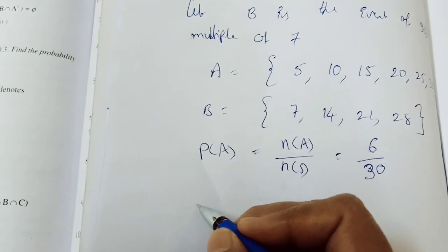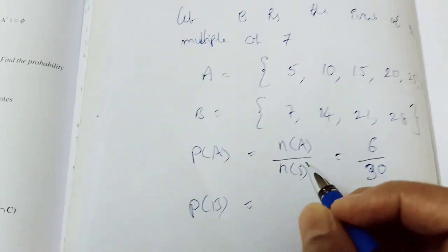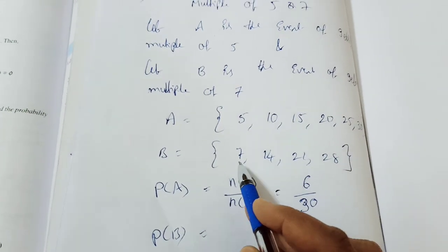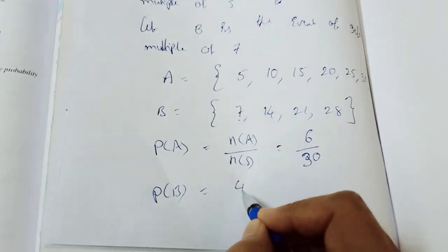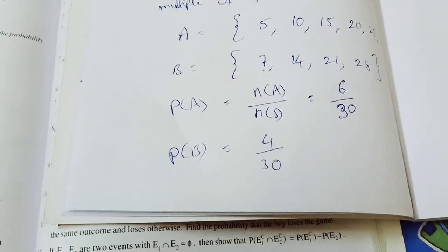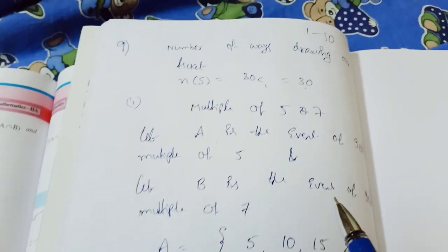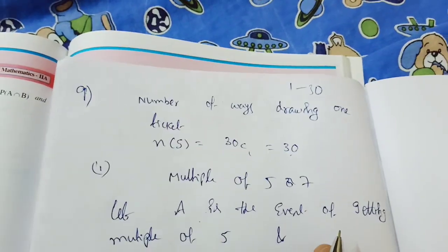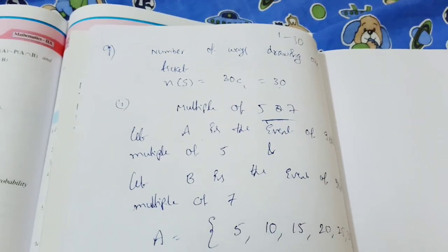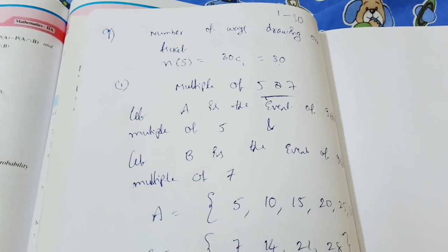Now P(B) = N(B) by N(S). Multiples of 7 from 1 to 30 are: 7, 14, 21, 28 — that is 4 elements. So P(B) = 4 by 30. The question asks for A union B, so we need P(A union B).